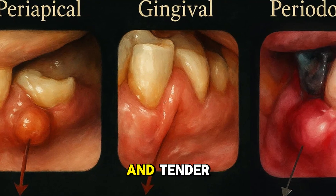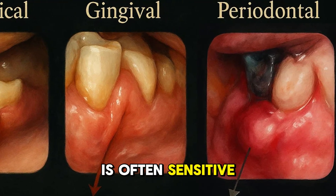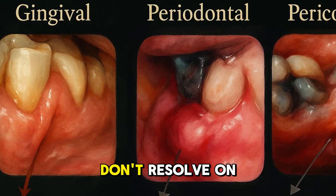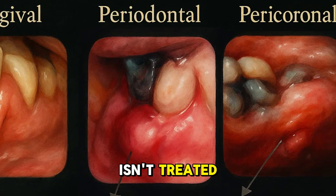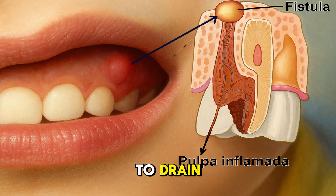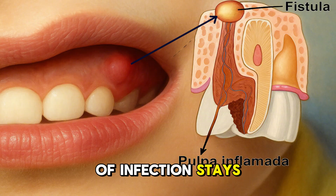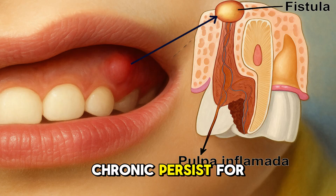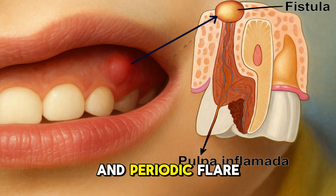This bump is usually painful, may release pus if pressed or spontaneously, and often leaves a bad taste in the mouth. It is swollen, red or whitish, and tender. The affected tooth is often sensitive or has a history of issues. These abscesses usually don't resolve on their own — the pus may drain temporarily, relieving symptoms, but the source of infection remains and can become chronic, persisting for years with mild symptoms and periodic flare-ups.